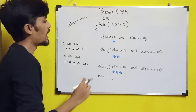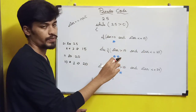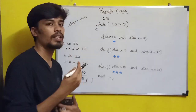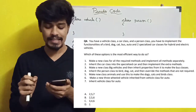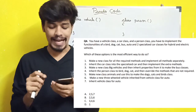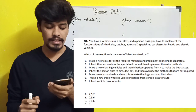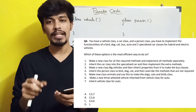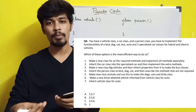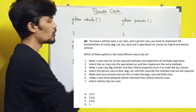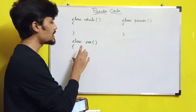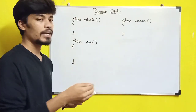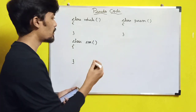You have a Vehicle class, a Car class, and a Person class. You have to implement the functionalities of bird, dog, cat, bus, auto, and two specialized car classes for Hybrid and Electric vehicles. Which of these options is the most efficient way to do so? We have seven options. We have to solve the problem and identify the correct class hierarchy — inheriting the third class and its functionalities.